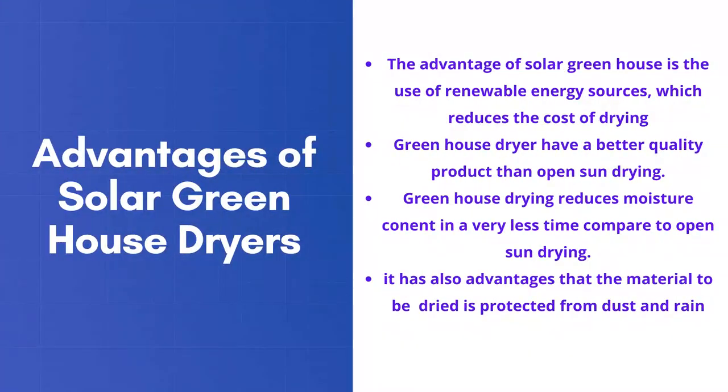The advantages of the greenhouse dryer include: it uses renewable energy, it produces better quality product than open sun drying, it reduces moisture content in very less time compared to open sun drying, and the materials to be dried are protected from dust and rain. In this lecture, we have discussed why greenhouse dryers are much more important in comparison to open sun drying, and we have discussed different types of solar greenhouse dryers and different modes of operation. We have classified the solar greenhouse dryers on different bases — whether the cover material may be different or modes of operation will be different. Thank you very much.